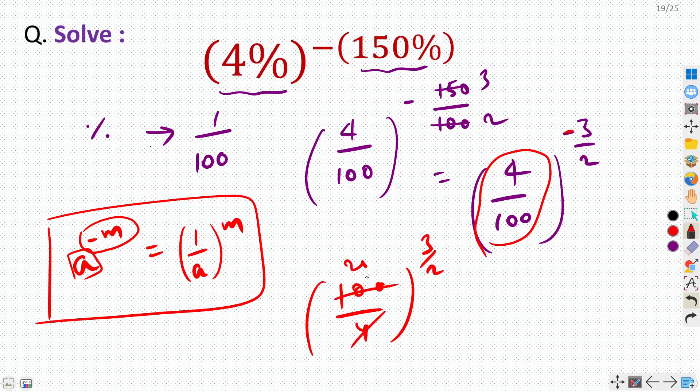So 4 into 25 is 100, so we can rewrite this as 25 raised power 3 by 2.